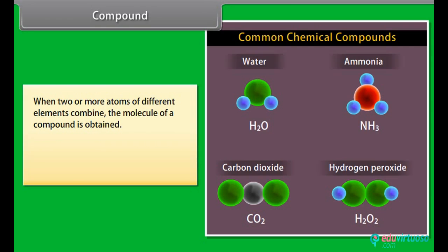When two or more atoms of different elements combine, the molecule of a compound is obtained. The examples of some compounds are water, ammonia, carbon dioxide, sugar, etc.